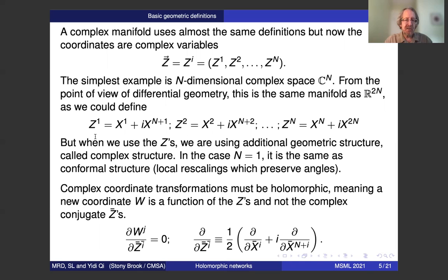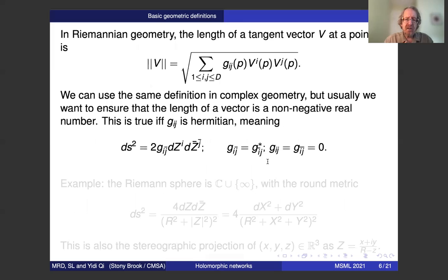The basic property that we would use is that the coordinate overlaps, the transformations between coordinate systems should be holomorphic functions. So a coordinate W should be a function of the holomorphic Zs and not the complex conjugate Z bars. If we can define a manifold that way, then we have an additional geometric structure called complex structure. In the case of a single dimension, this is actually equivalent to what may be familiar conformal structure. In higher dimensions, it's much studied in mathematics, but essentially a new structure.